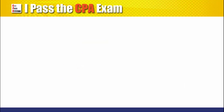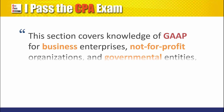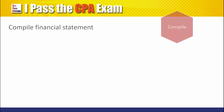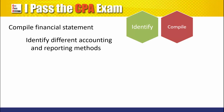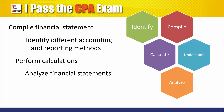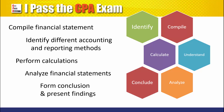What does FAR cover? This section covers knowledge of generally accepted accounting principles for business enterprises, not-for-profit organizations, and governmental entities, and the skills needed to apply that knowledge. In other words, examiners expect candidates to compile financial statements — for example, from journal entries to how data is presented in the financial statement — identify the different financial accounting and reporting methods, perform calculations such as bonds and leases, understand and analyze the information from financial statements, and form conclusions from financial statements and present findings.